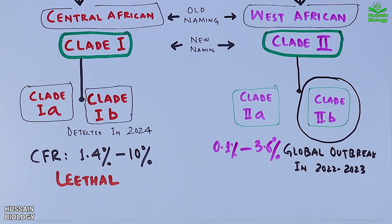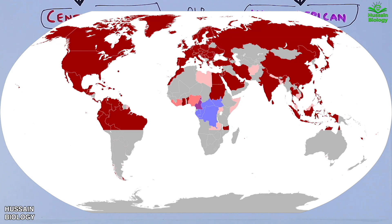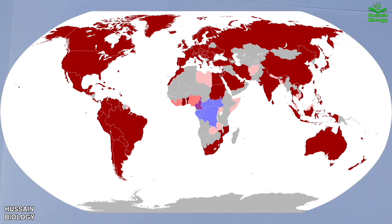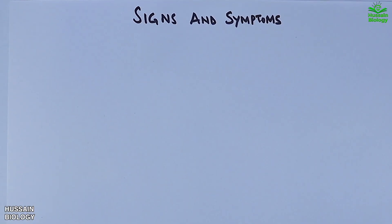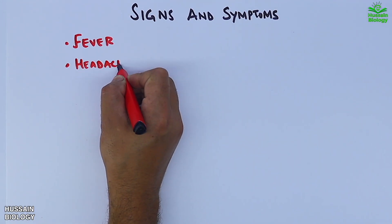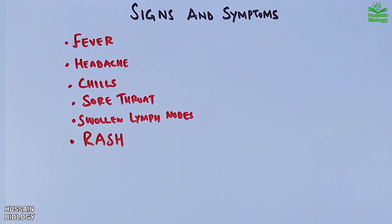The map distribution of these clades is shown here. The red color regions represent the Clade 2 outbreak in 2022, the pink color designates endemic Clade 2 in West African countries, and the purple designates Clade 1 presence in the Central African region. Now let's look at the signs and symptoms of mpox disease: fever, headache, chills, sore throat, swollen lymph nodes, and rash. This rash develops in phases, which we will see later.